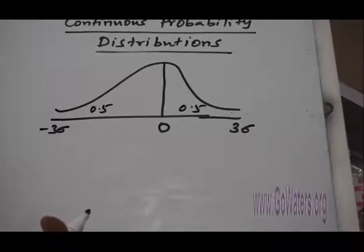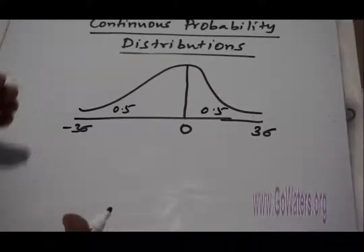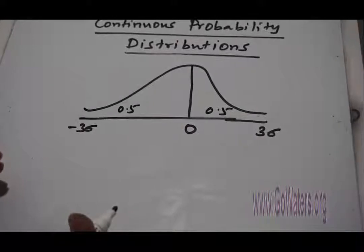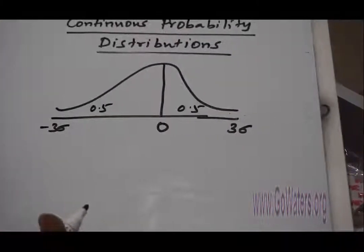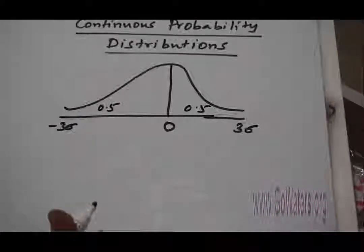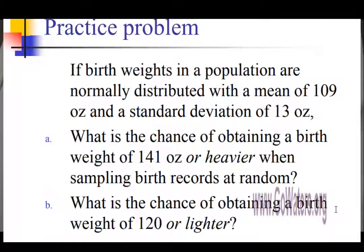A practice problem where the standard normal table helps us find a medical application. If birth weights in a population are normally distributed with a mean of 109 ounces and a standard deviation of 13 ounces.